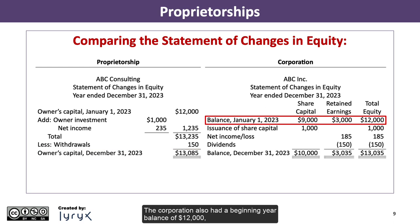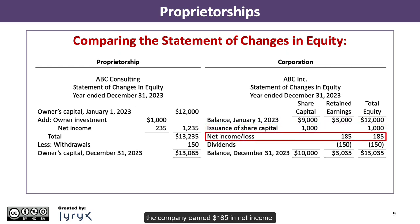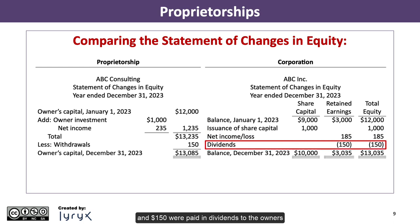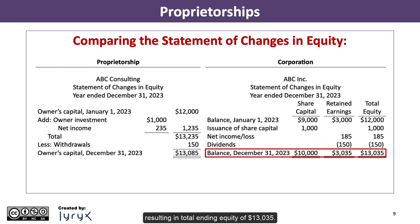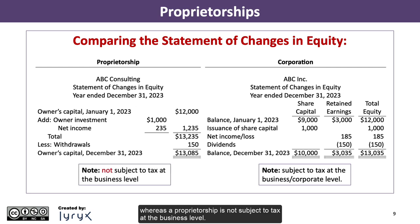Then the owner withdrew $150 to end up with $13,085 in owner's capital at the end of the year. The corporation also had a beginning-year balance of $12,000, but that consisted of $9,000 in share capital and $3,000 in retained earnings. Owners invested $1,000 in exchange for shares, the company earned $185 in net income, and $150 were paid in dividends, resulting in total ending equity of $13,035. The difference relates to the income taxes applied at the business/corporate level, whereas a proprietorship is not subject to tax at the business level.